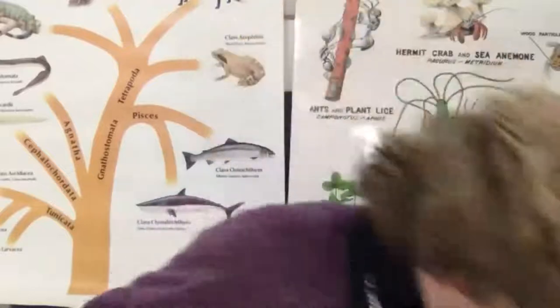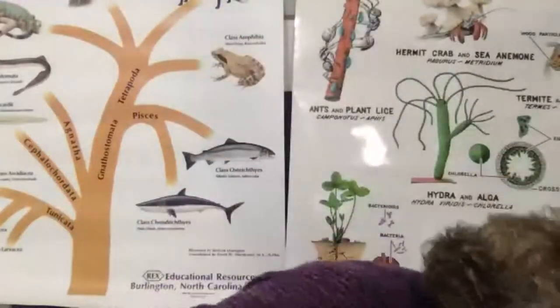Good morning, boys and girls. Welcome to my lab. We're going to be talking about the life cycle of a plant. Now, if you've ever eaten collard greens, you know they're a big old leaf. And you cut it up and cook it with onions and bacon, and it's delicious.